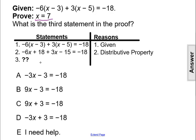Well, we would try to combine our like terms and simplify the left side of that equal sign. We could combine negative 6x plus 3x to be negative 3x, and 18 minus 15 to be plus 3, and then equals negative 18. So that is the equation that would be in statement number 3,